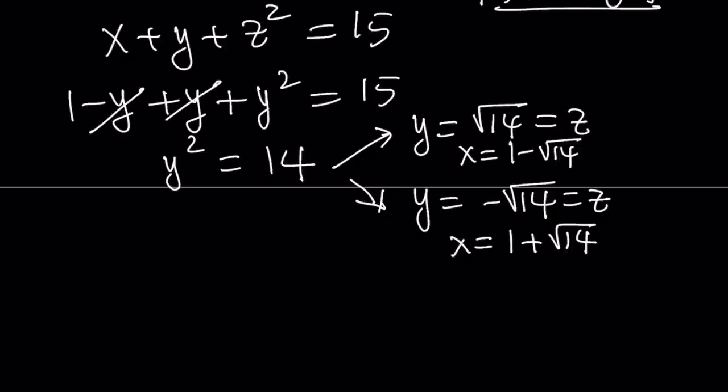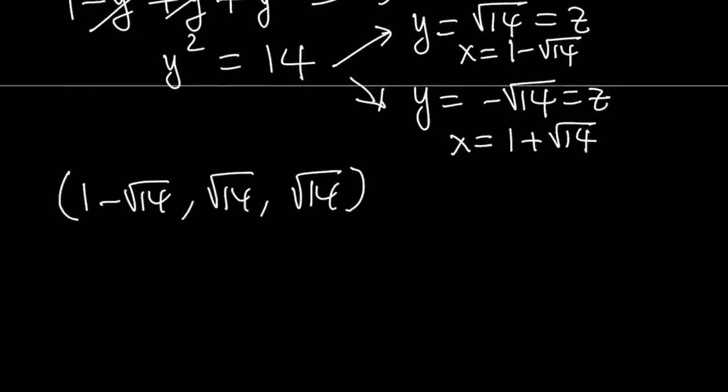I'm going to write them as ordered triples, and then you're going to get to see the solution. So, one of them is going to give us 1 minus root 14, comma, root 14, comma, root 14. This is one of the ordered triples. And then, another scenario would be 1 plus root 14, comma, negative root 14, comma, negative root 14.